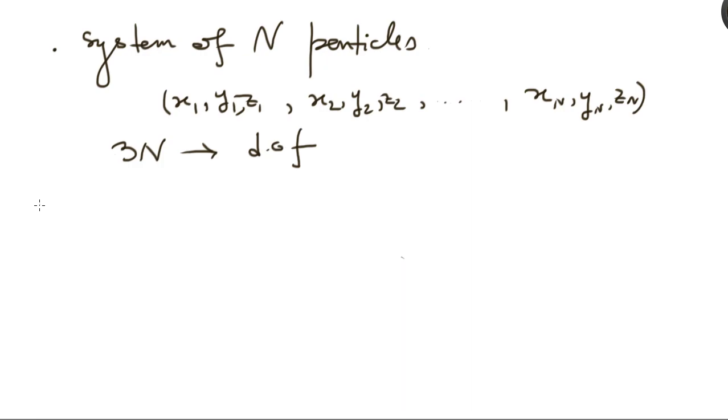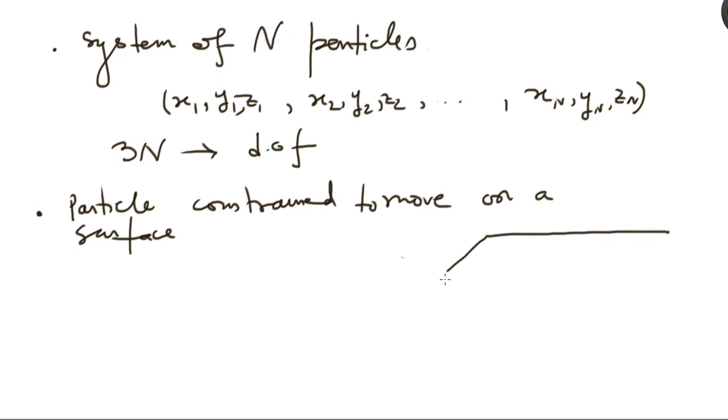Let us take an example of again a point particle which is constrained to move on a surface. Let us say the surface is flat and is at z equal to 0. So, I am having this thing in mind right now. You have your this plane which is situated at z equal to 0. So, this is z axis, this is z equal to 0, that is your x axis, that is your y axis.